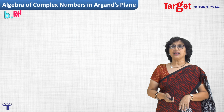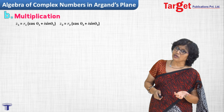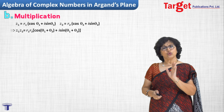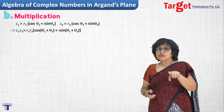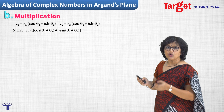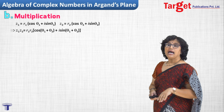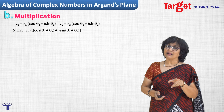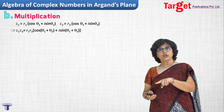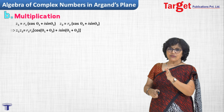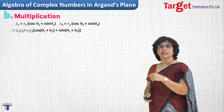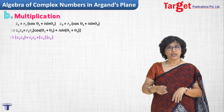Now I move to multiplication of complex numbers shown on the Argand plane. Again z1 = r1(cos θ1 + i sin θ1) and z2 = r2(cos θ2 + i sin θ2). For z1·z2, using the properties: modulus of z1·z2 equals mod z1 times mod z2, and argument of z1·z2 equals argument of z1 plus argument of z2. So we can directly write z1·z2 = r1r2 · [cos(θ1 + θ2) + i sin(θ1 + θ2)].